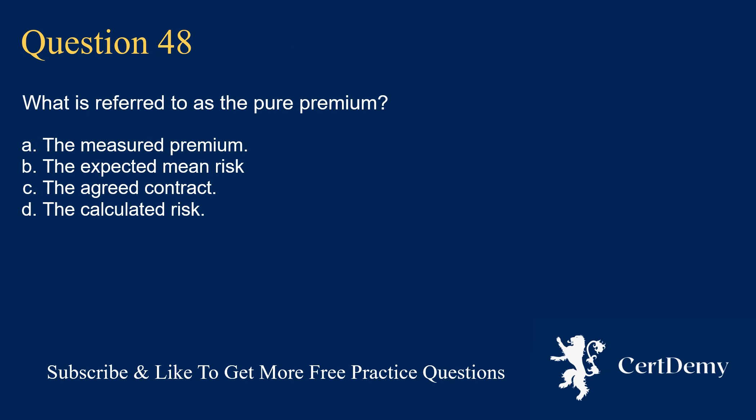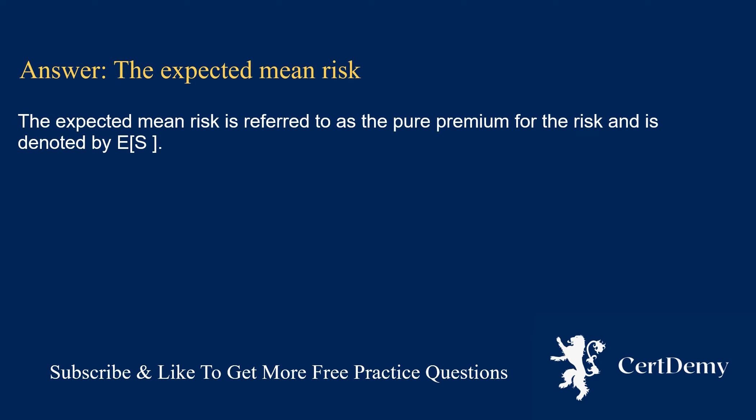Question 48. What is referred to as the pure premium? Options: the measured premium; the expected mean risk; the agreed contract; the calculated risk. The answer is: the expected mean risk. The expected mean risk is referred to as the pure premium for the risk and is denoted by E(S).